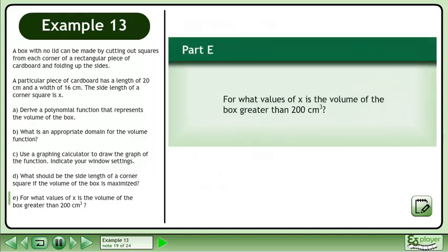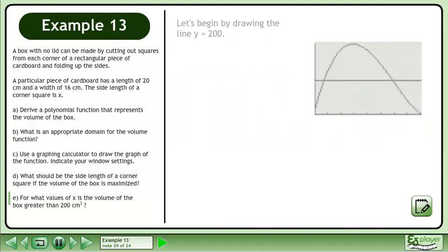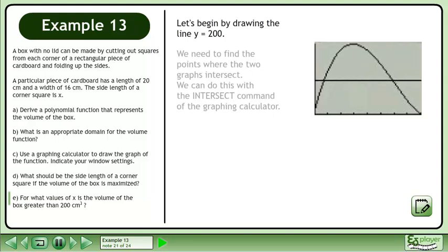Now we'll move on to Part E. For what values of x is the volume of the box greater than 200 cm³? Let's begin by drawing the line y = 200. We need to find the points where the two graphs intersect. We can do this with the intersect command of the graphing calculator.